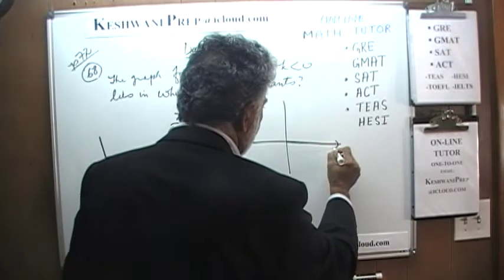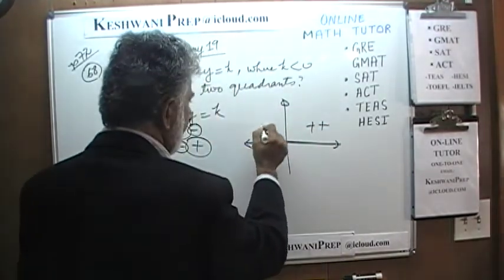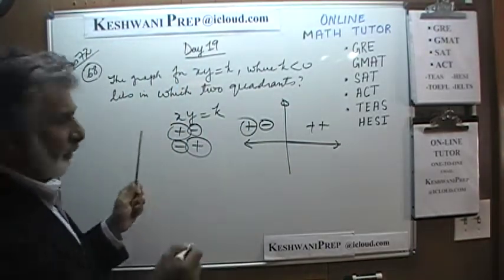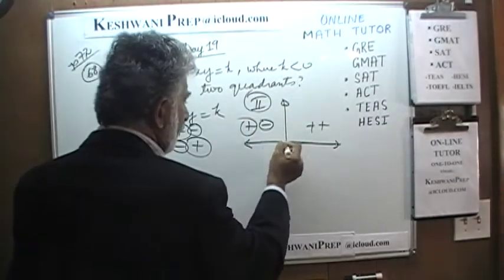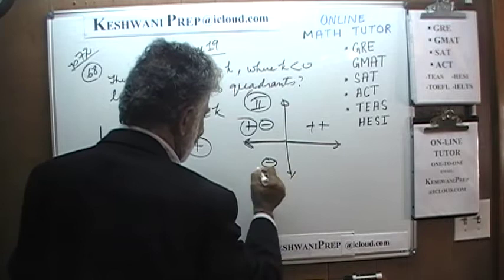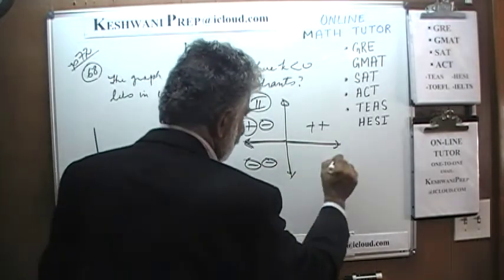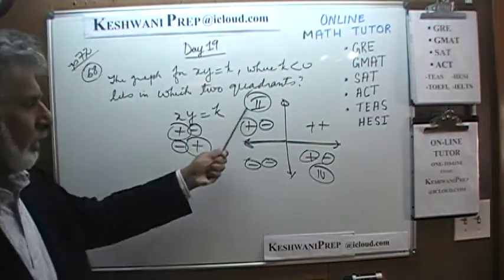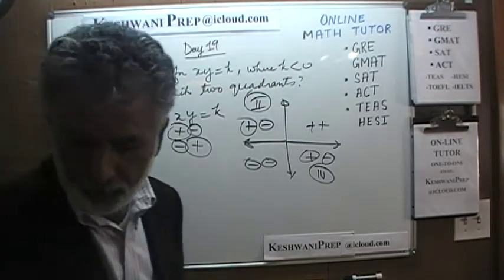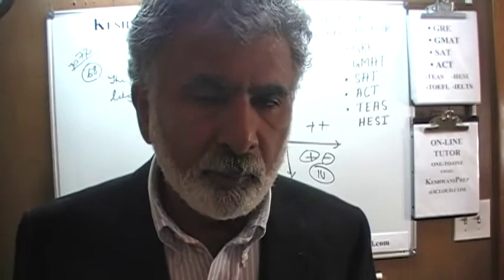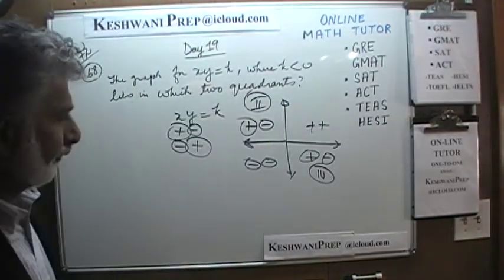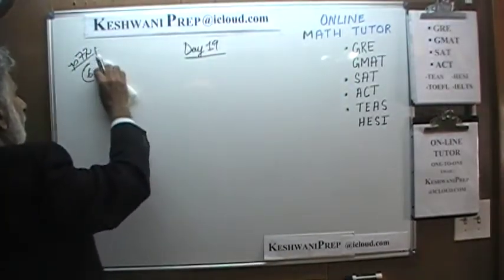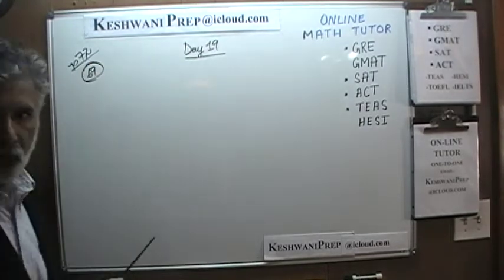As we go along the positive x-axis, x is positive and y is positive — that won't give a negative product. Moving into the second quadrant, x is negative and y is positive — there you go, the product is negative. In the third quadrant, x is negative and y is also negative — that's not going to work. In the fourth quadrant, x is positive and y is negative — there you go. So the graph lies in the second quadrant and the fourth quadrant.